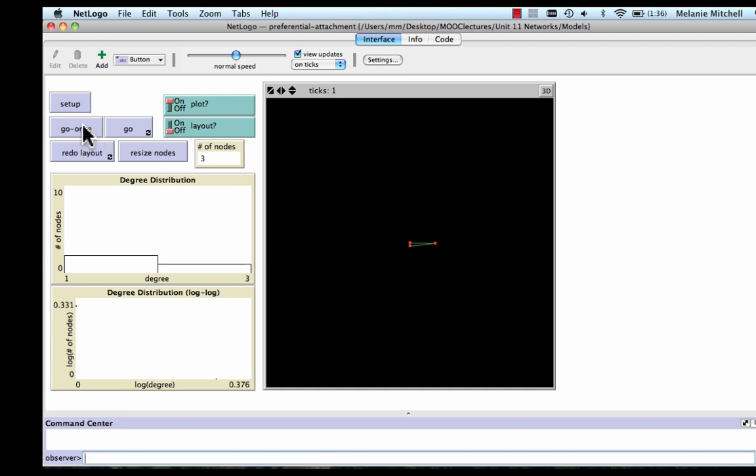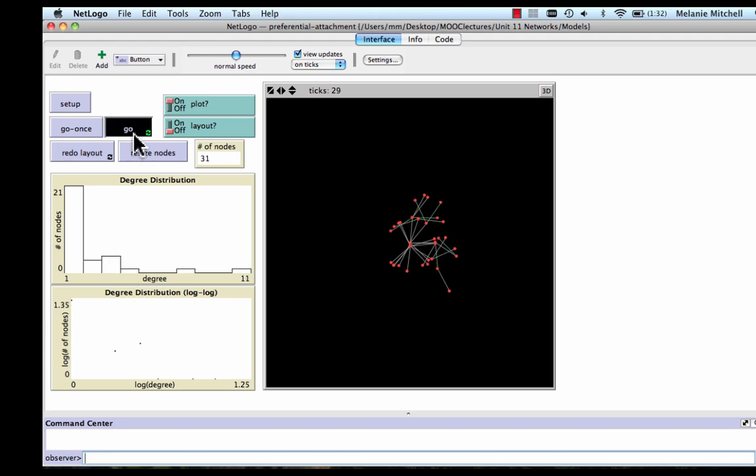And if I go once, we have our third node comes in and links to that node. Go once again. Well, you can see this is going to start to look kind of messy. And in fact, if I keep going, we get a big mess.